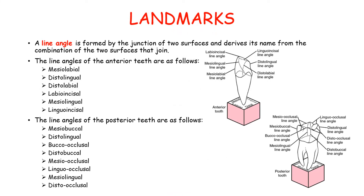A line angle is formed by the junction of two surfaces and derives its name from the combination of those two surfaces. For anterior teeth, there are six line angles: mesiolabial, distolabial, linguodistal, mesiolingual, labioincisal, and linguoincisal. For posterior teeth, there are eight line angles: mesiobuccal, distobuccal, distolingual, mesiolingual, buccoocclusal, distoocclusal, linguoocclusal, and mesioocclusal.